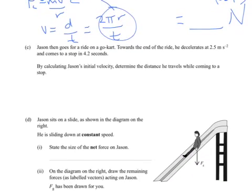Part C: basically, Jason then goes for a ride on a go-kart. So I think we're scrapping all the circular motion stuff, focusing on the go-kart. Towards the end of the ride, he decelerates at 2.5 meters per second per second. So that's quite an important figure, let's just circle that. And he comes to a stop in 4.2 seconds. So that's our time.